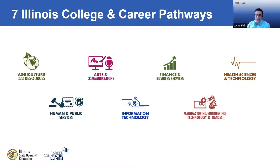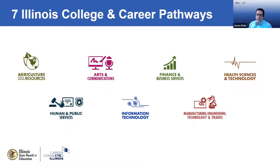The seven career pathways are: Agriculture, Food and Natural Resources; Arts and Communications; Finance and Business Services; Health Sciences and Technology; Human and Public Services — which is the one we work in as educators; Information Technology; and Manufacturing, Engineering, Technology, and Trades.